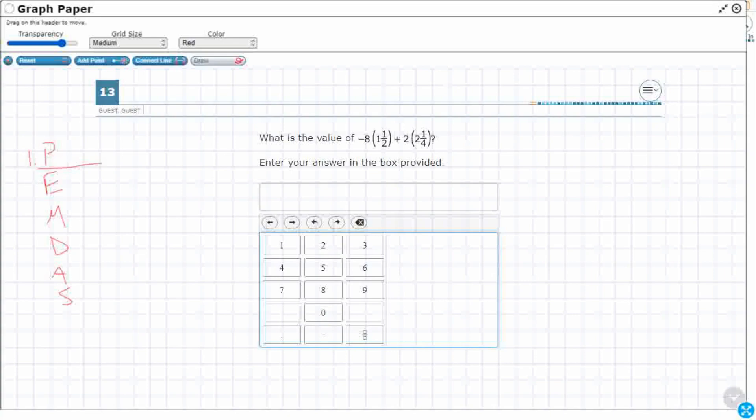Please excuse my dear Aunt Sally. All right, parentheses happens first, exponent second, multiplication and division are third, addition and subtraction are fourth. Those are inverse operations.